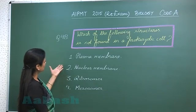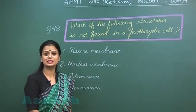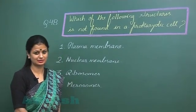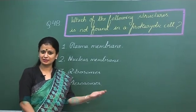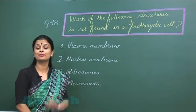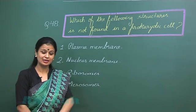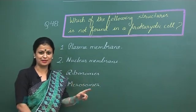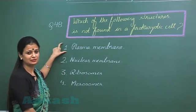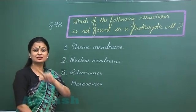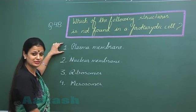Now let's discuss question number 48: Which of the following structures is not associated with a prokaryotic cell? In the case of prokaryotes, membrane-bound organelles are absent. There is presence of a primitive nucleus called the nucleoid, and around it the membrane is absent. The first option — plasma membrane — is present in prokaryotes, as it is the only true membrane they have.